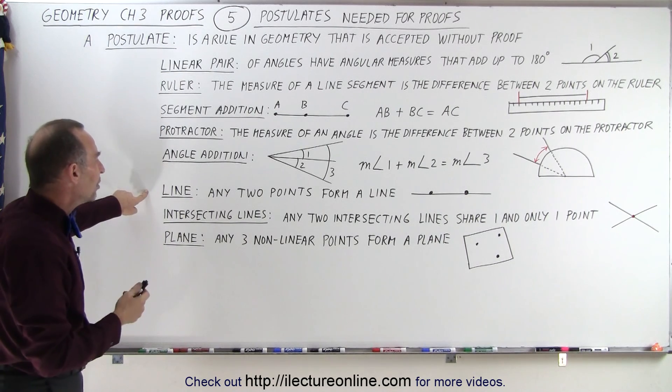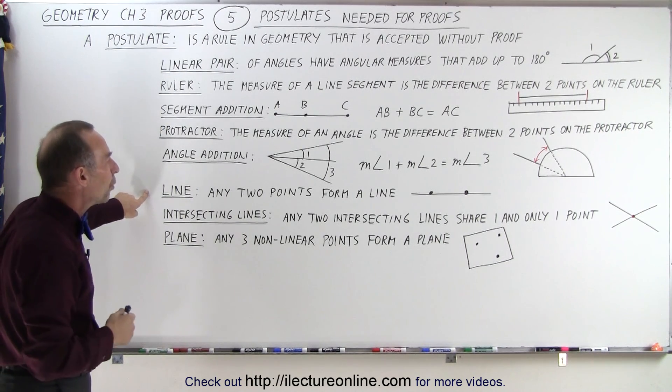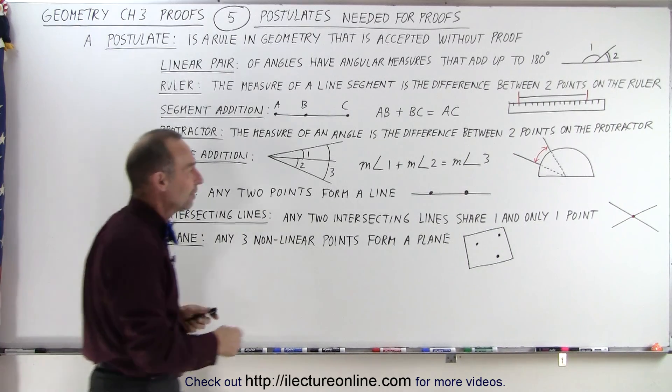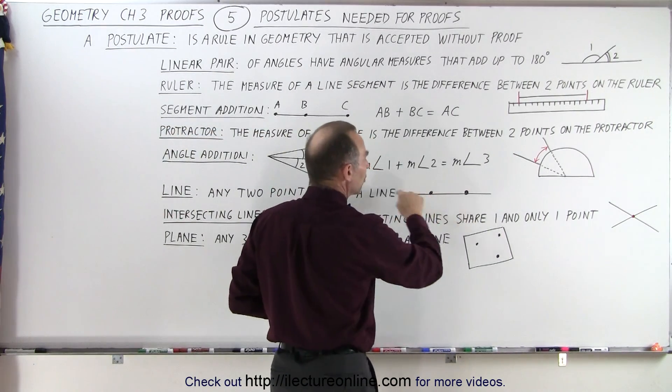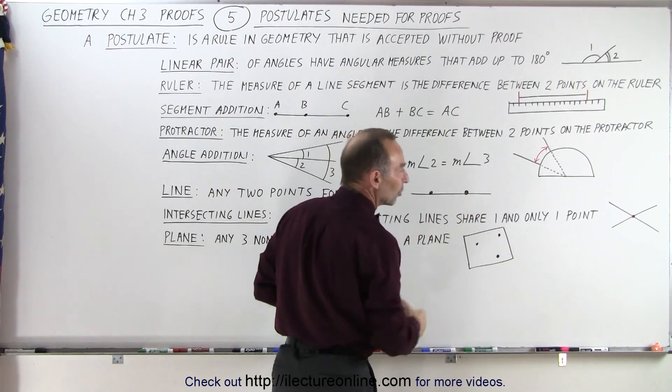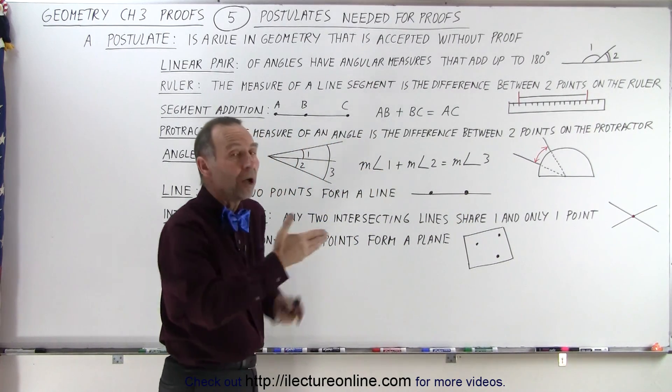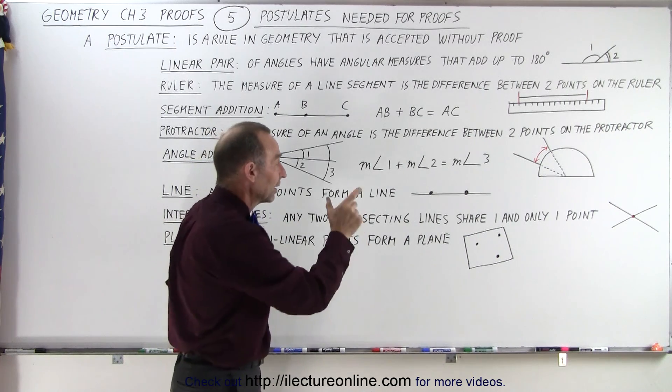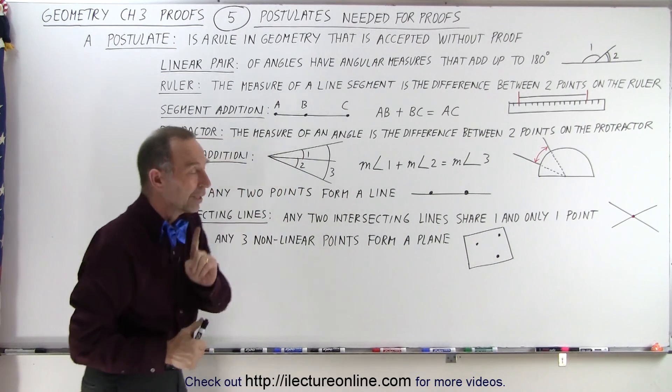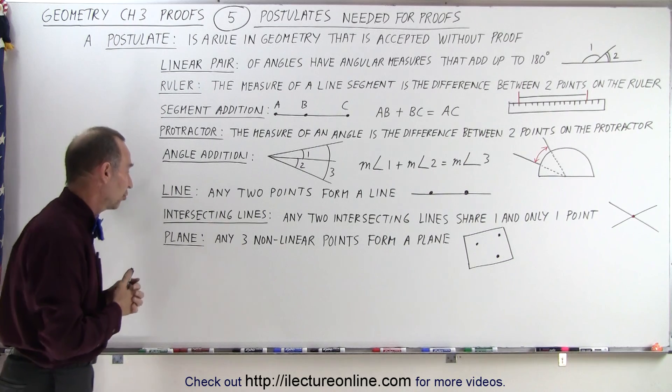A line by definition, any two points form a line. In other words, you have any two points and you connect them with a line that is by definition a line. So a line can be formed by two points and there's no other line that can exist that connects to those two points. There's only one line and that's by postulate.